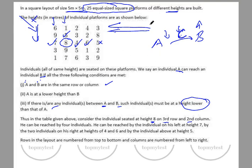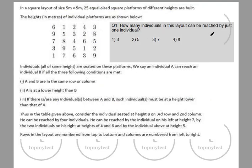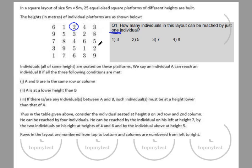This is straightforward as long as we follow those three rules. Question 1: How many individuals in this layout can be reached by just one individual? Let's go through the grid. 1 cannot be reached by anyone. 2 can be reached by one person and nobody else — so 2 qualifies. 4 can be reached by two people — out. 9 can be reached by five, seven, six — out. 3 can be reached by two — out. 8 can be reached by three, two, five — out. 7 can be reached by three people.